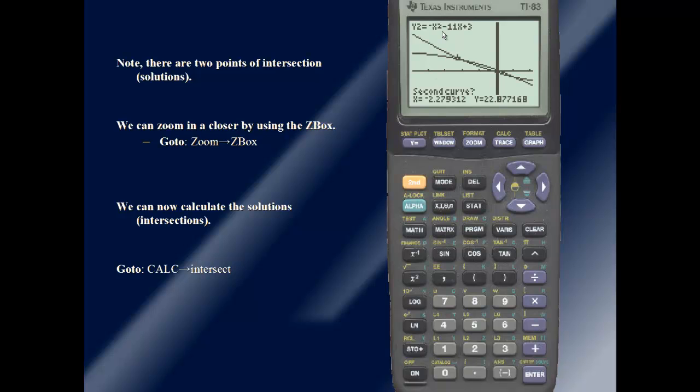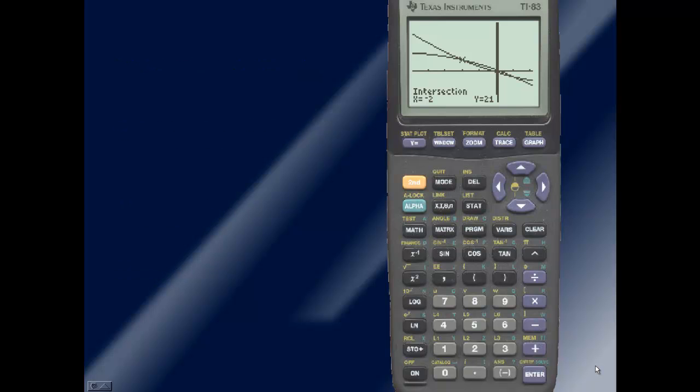Notice it jumps to our second curve, and it's still near the same intersection point. So I'll hit enter once again. And for guess, we always press enter. So we can see the first point of intersection lies at the coordinates negative 2 comma 21.